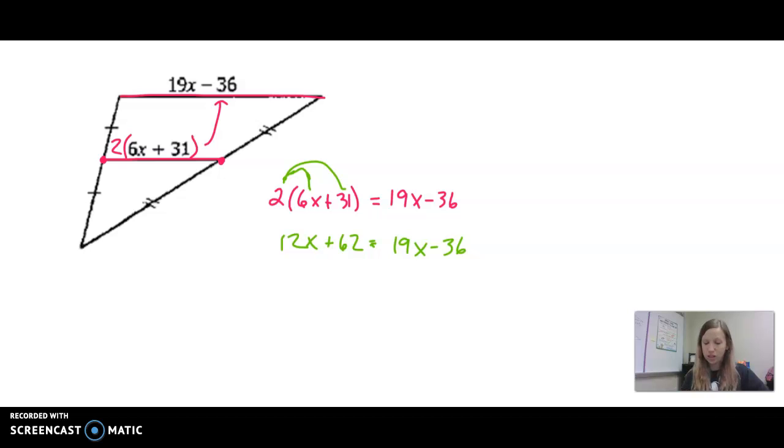Now from here, we need to get rid of one of the x's. So I'm going to subtract 12x on both sides. So we have 62 equals 19 minus 12 is 7x.